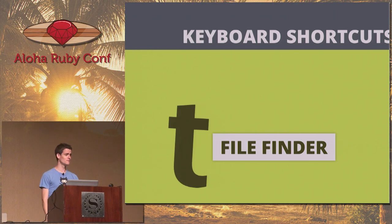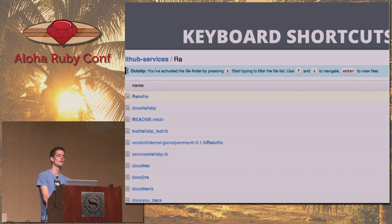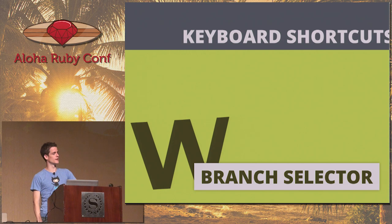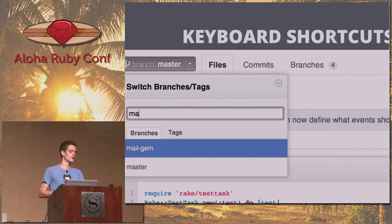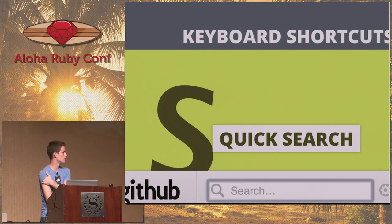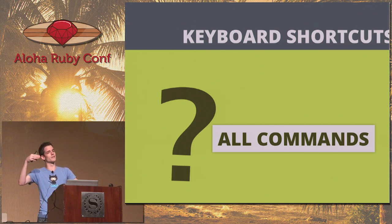Press T on a repo page and you get a quick file finder — like command-T in TextMate. You can quickly type a filename and jump to it. W hits the branch selector, a fuzzy finder to quickly jump to a branch. S is for quick search — our command bar, like Alfred or Quicksilver, lets you jump to projects, issues, and searches. Hit question mark on any page to see all the keyboard shortcuts for that particular page.